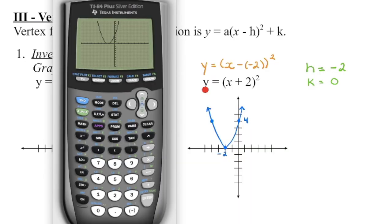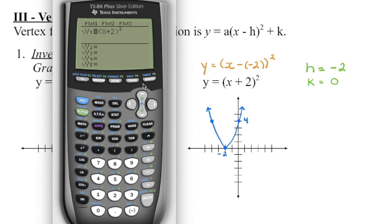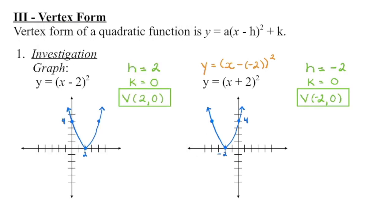Now let's look at the second graph. We go into y equals and change that minus sign to a plus sign. Using the calculator to get those key points, and because this is vertex form, let's pay attention to where that minimum is. We can see that the vertex is at negative 2, 0. That's interesting — it looks as though the h value is the x-coordinate of the vertex, and the k value is the y-coordinate of the vertex.